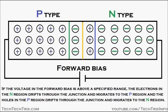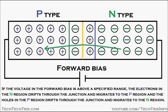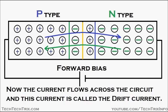these electrons in the N region drift through the junction and migrate to the P region, and the holes in the P region drift through the junction and migrate towards the N region. You can see the electrons drifting through the junction towards the P region and the holes drifting through the junction towards the N region.